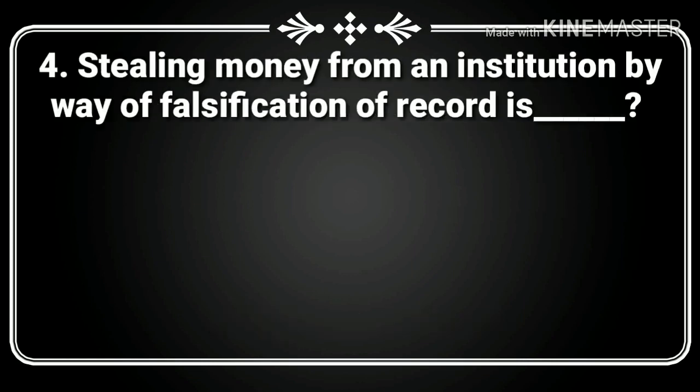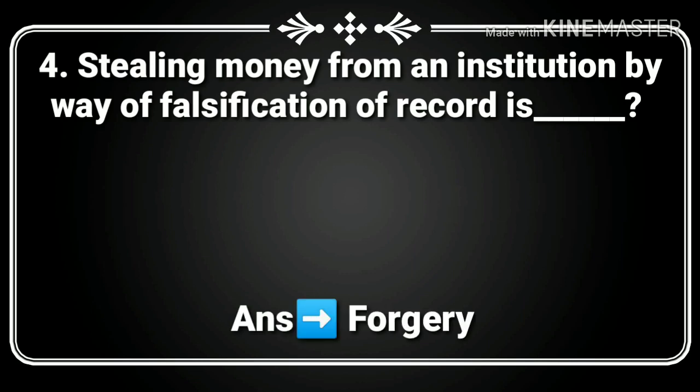4th question. Stealing money from an institution by way of falsification of records is called? Answer: Forgery.